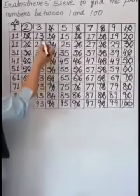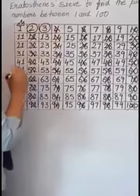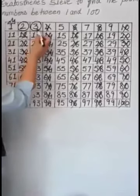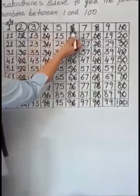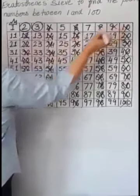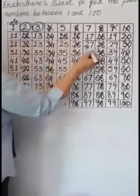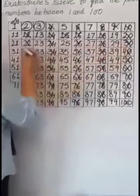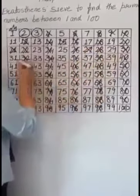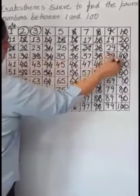Now we will encircle the number 3 and put a cross on the multiples of 3. The multiples of 3 are: 6, 9, 12 already cut, 15, 18 already cut, 21, 27, 33, and 39.